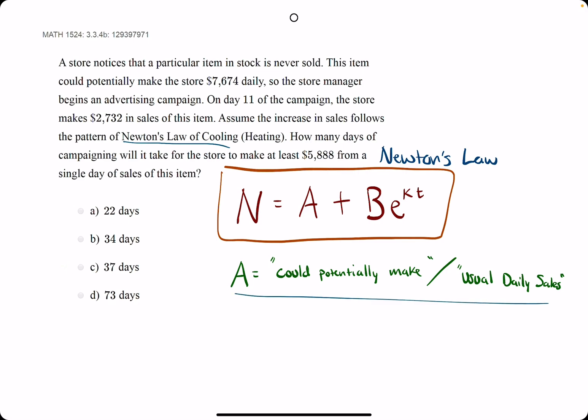Next step: A should be found within the problem statement. In this case, they say the item could potentially make the store $7,674, so that is our A value.